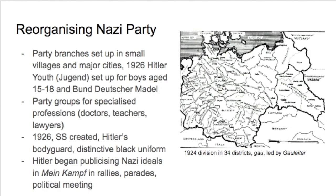With the decrease in popularity of the Nazi Party, Hitler decided to reorganise it. He set up branches in all the major cities, he set up the youth movement — the Hitler Youth for boys and the Band of German Maidens for girls. He created the SS in 1926 as Hitler's bodyguard, with a distinctive black uniform, becoming quite symbolic of Hitler's power. He also created party groups for specialised professions, building a sense of belonging, and began to practise the ideas published in Mein Kampf.